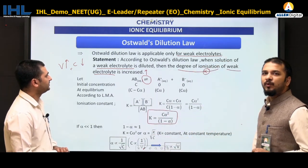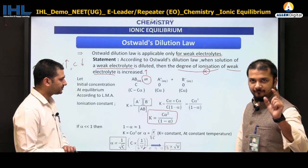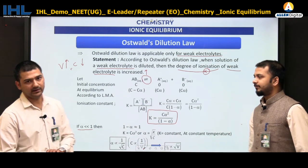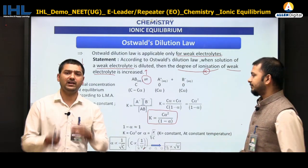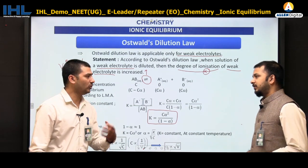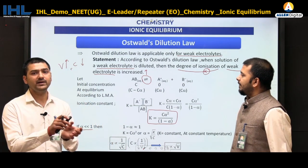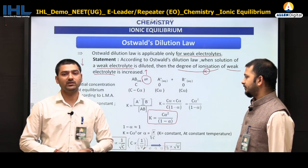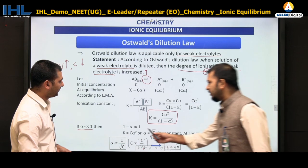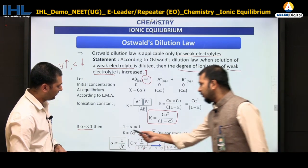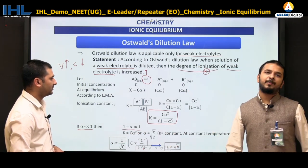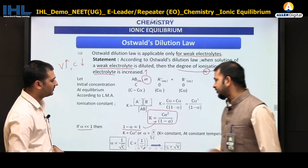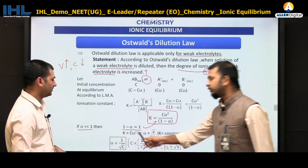Since it is a weak electrolyte, we assume alpha is much less than 1 — typically less than 10%, i.e., α < 0.1. In that case, (1 − α) ≈ 1, so the expression simplifies to K ≈ C·α². Therefore, α = √(K/C).